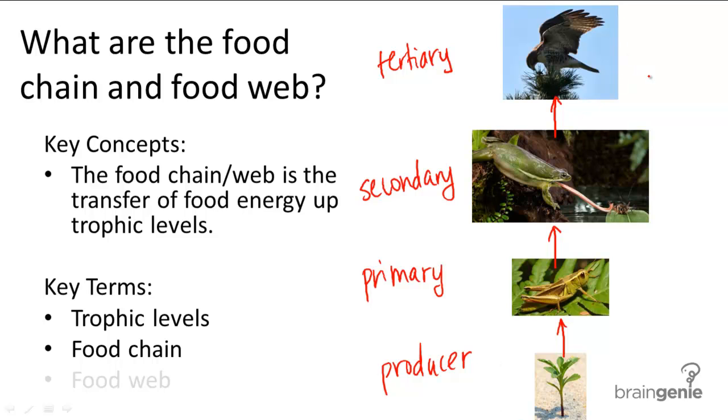A common misconception is that the arrows are supposed to be drawn down because the eagle eats the frog, eats the grasshopper, eats the plant. But it's actually the flow of energy up.